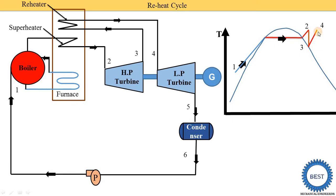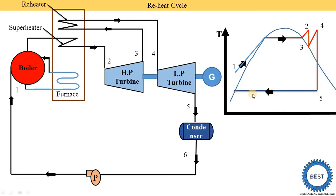We draw a line representing the reheating process. This is point number four. The temperature T2 and temperature T4 are the same — meaning the steam coming out from the high pressure turbine is again heated to the same temperature as the inlet of the high pressure turbine. At the inlet of both turbines, the temperature of the steam is the same; T2 equals T4. Then steam is supplied to the LP turbine, where isentropic expansion is carried out. This is point number five, then it is supplied to the condenser.